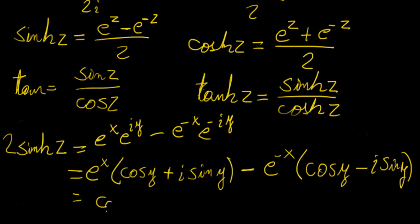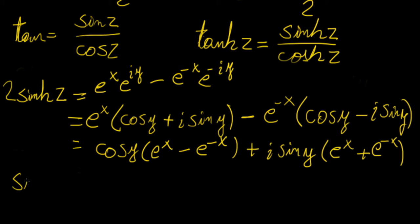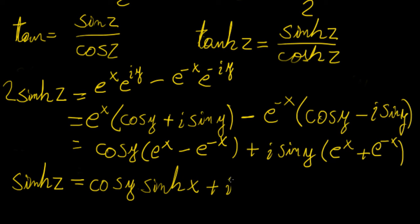Regrouping: cos(y)·(e^x − e^(−x)) + i·sin(y)·(e^x + e^(−x)), then dividing by 2 gives sinh(z) = sinh(x)·cos(y) + i·cosh(x)·sin(y). So the hyperbolic sine of a complex variable has real part sinh(x)·cos(y) and imaginary part cosh(x)·sin(y).